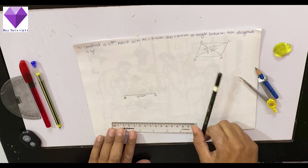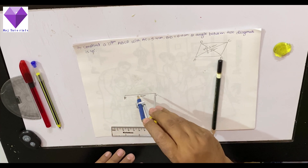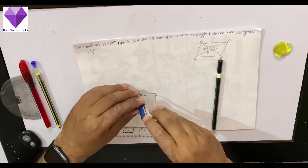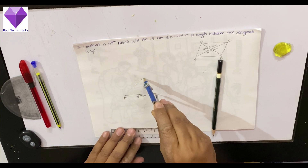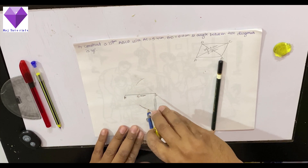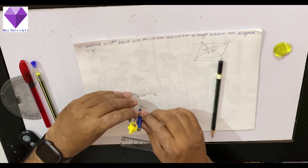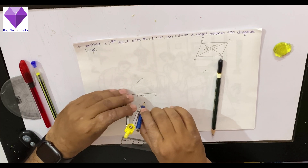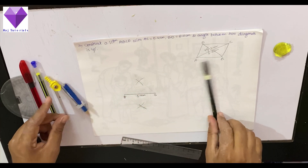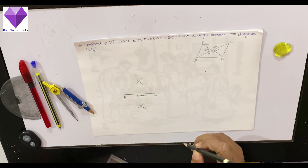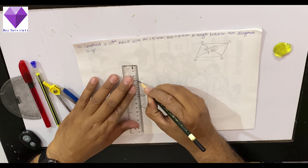Now I will need to find the angle bisector of this. So to get that I will take more than half — one arc up, one arc down. The same way with A as center I will draw one arc down, one arc up. Now these two points I will join to get my center O on this line.